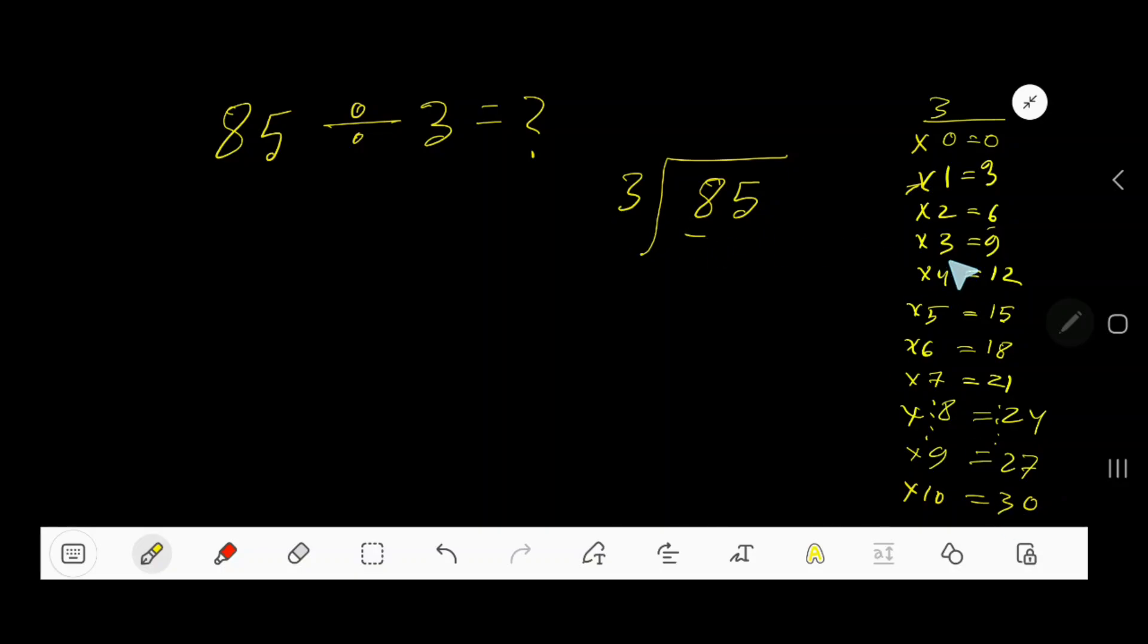3 goes into 8 how many times? 3 times 3 equals 9, which is greater than 8, so 2 times. Write 2. 2 times 3 equals 6. Subtract. Bring down this digit. 25. 3 goes into 25 how many times? 9 times equals 27, so 8 times, which gives us 24. 3 times 8 equals 24. Subtract 1. So our answer is 28 remainder 1.